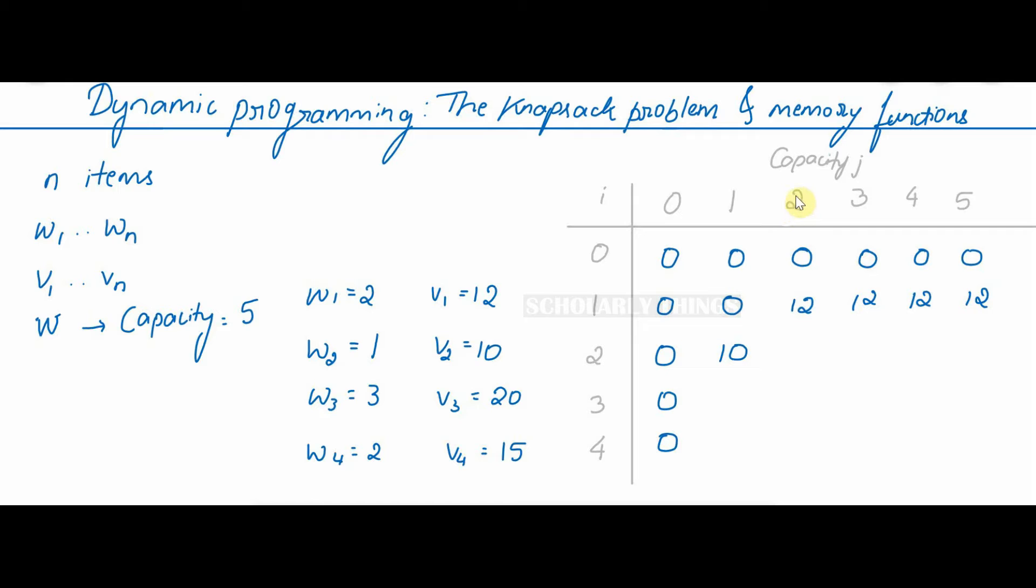Coming to the next value, when capacity is 2, now I need to consider both the objects. The first object has weight 2, second object has weight 1. I can fit either one of these. But I can see that the value of item 1 is higher. So I choose item 1. Write its value over here. When the capacity of the bag is 3, I can fit both these items because W1 plus W2 is equal to 3. So add the values of both items and write it over here. Similarly, when the capacity is 4 and 5, I can fit both the items. 22, 22.